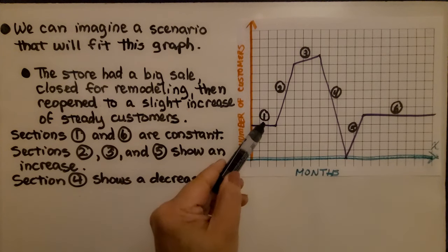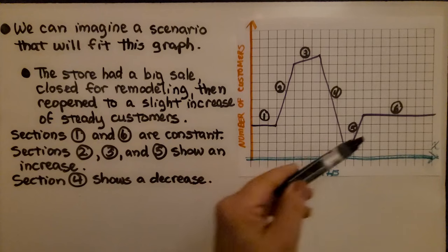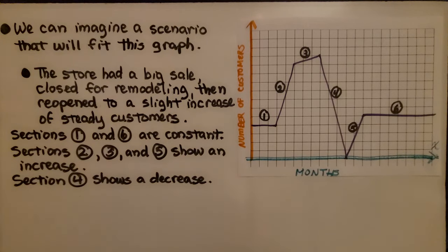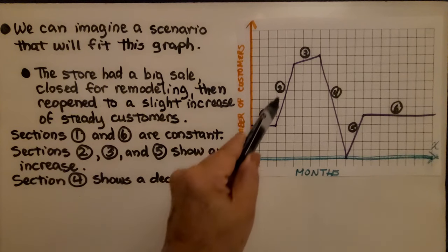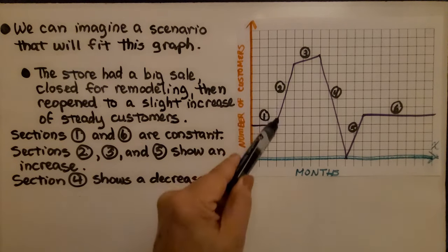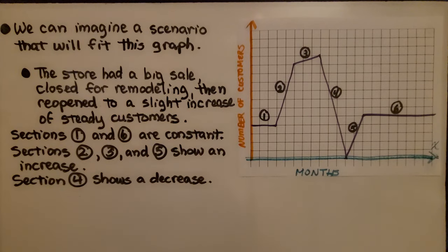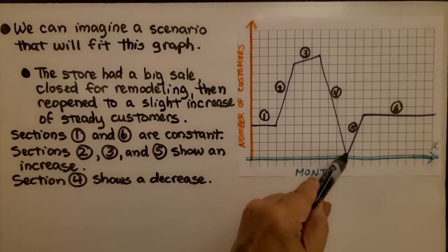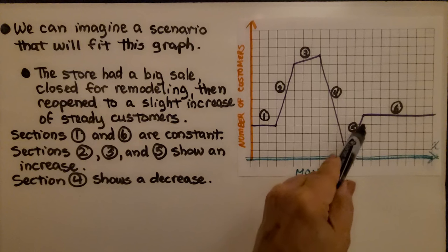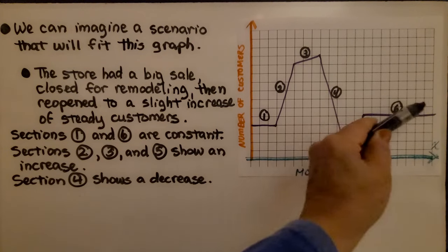But look, it's higher than in the beginning. We have a constant here, but now it's raised up. We can imagine a scenario that will fit this graph. We can think the store had a big sale, sold a lot of things, and then closed for remodeling, and then reopened to a slight increase of steady customers.